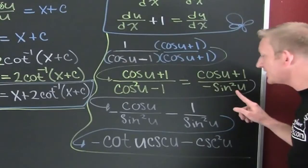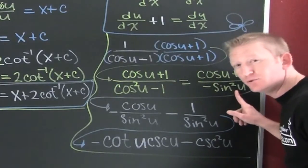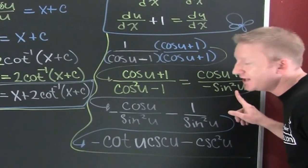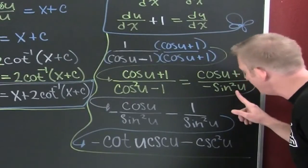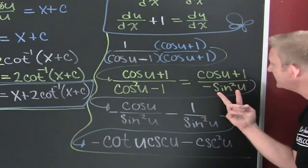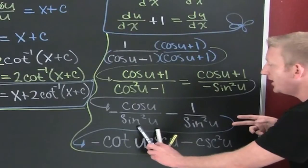That turns out to be minus the sine squared u. I'm doing a lot of side work so I can integrate that function. What I want to do now is take this fraction and split it into two fractions.